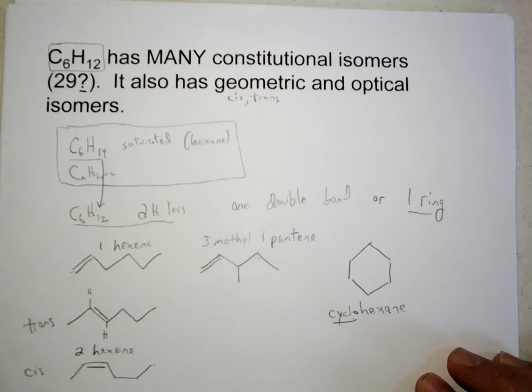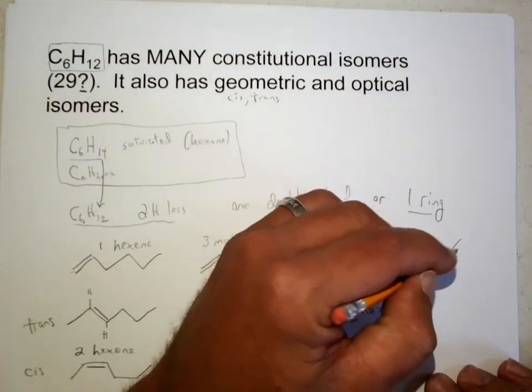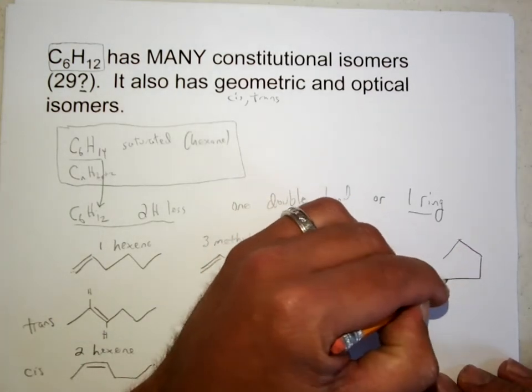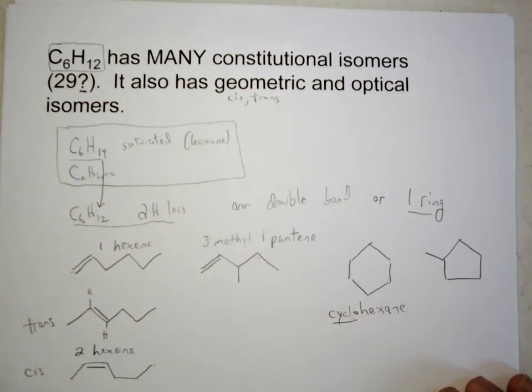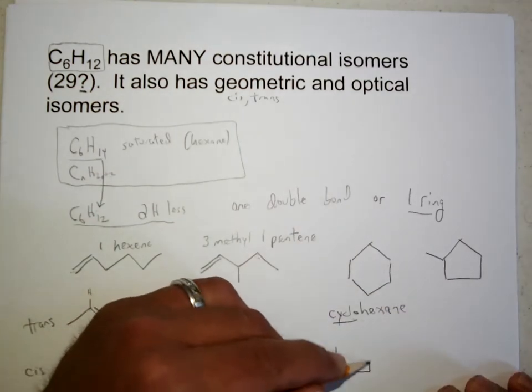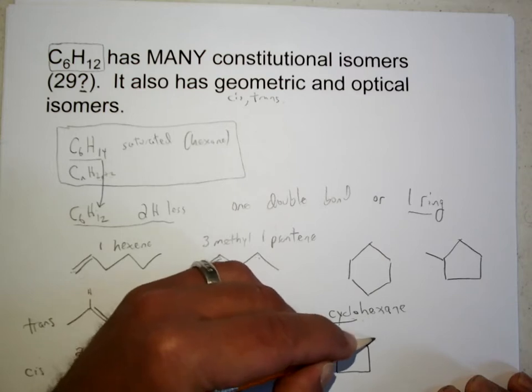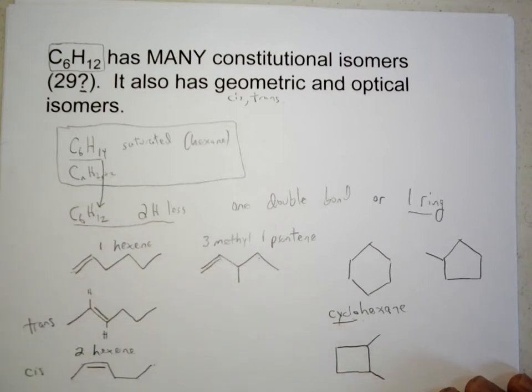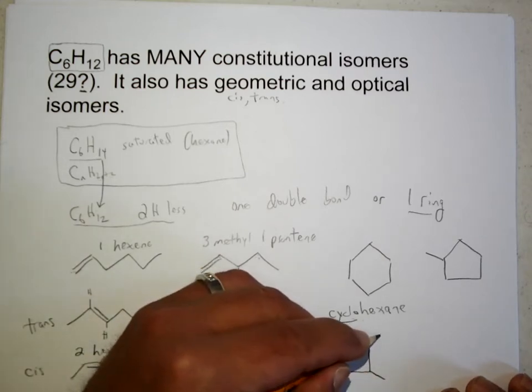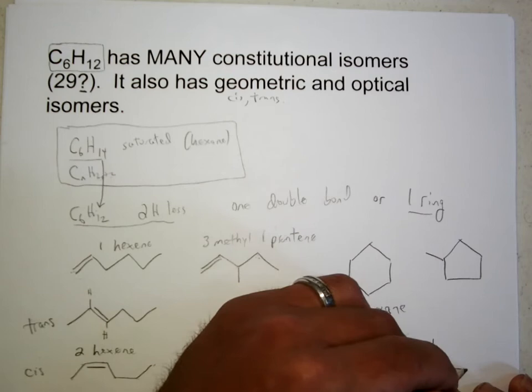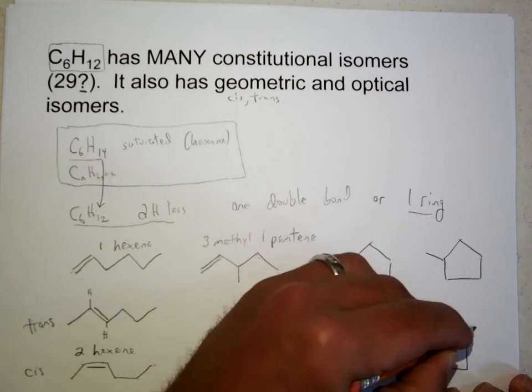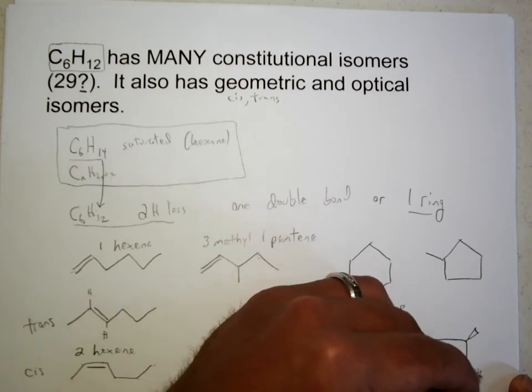Cyclohexane has the cyclo instead of the double bond to deal with the degree of unsaturation. Once you introduce a degree of unsaturation, you can have either rings or double bonds. Then you can make the ring smaller and put a side group, make the ring smaller and put two side groups. Now they can be cis or trans. I can aim them both forward and have cis, or I can aim one forward and one back and have trans.